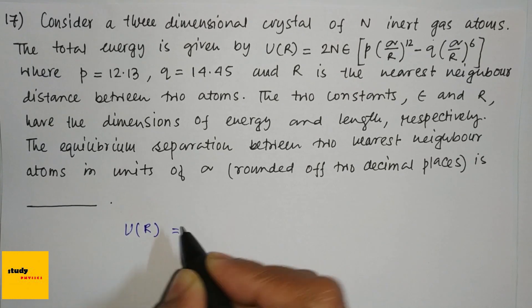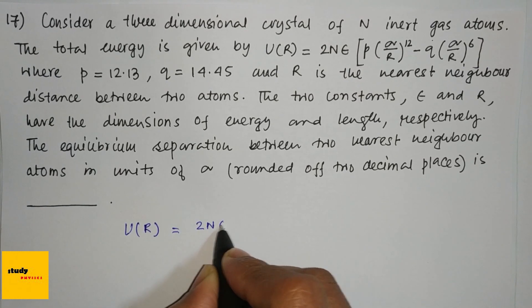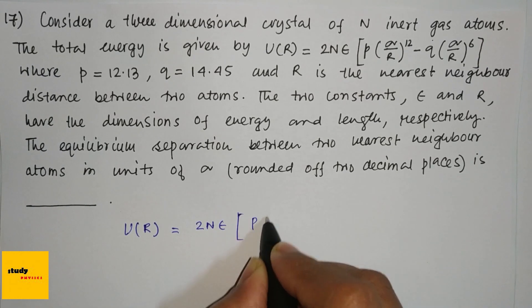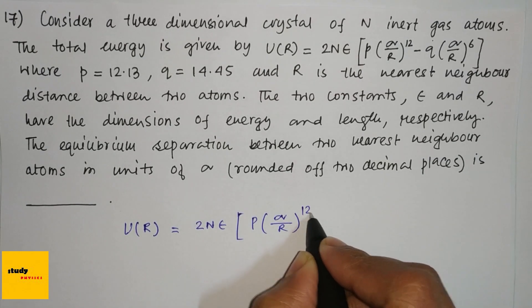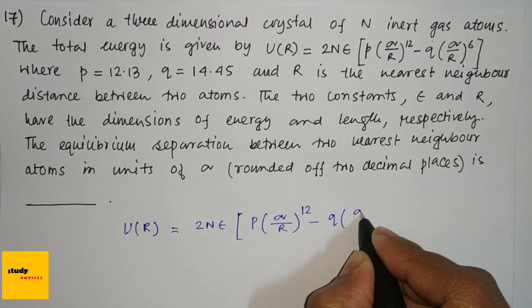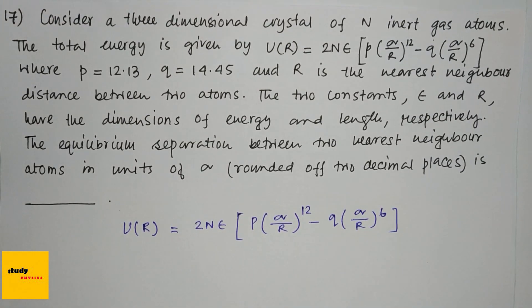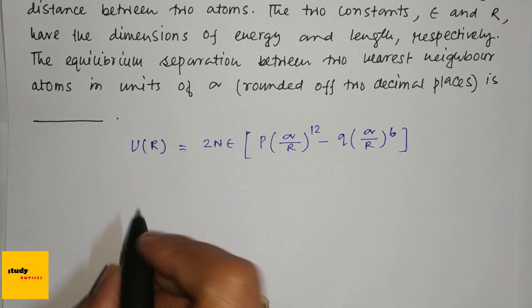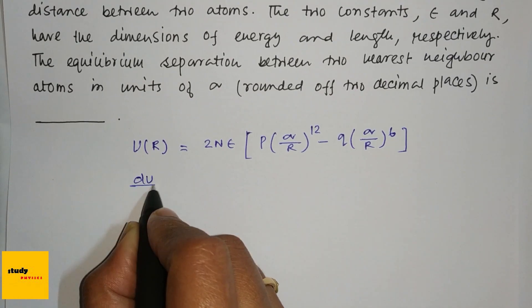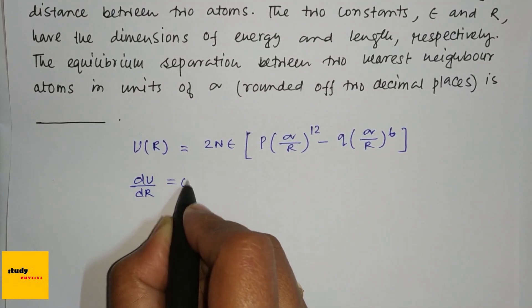So here's U(R) equals 2Nε[p(σ/R)^12 - q(σ/R)^6]. Now dU/dR equals 0.